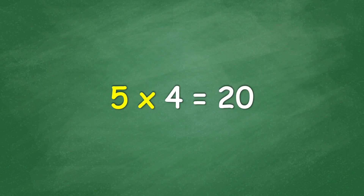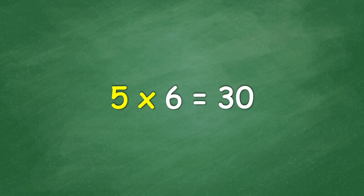5 times 4 equal 20. 5 times 5 equal 25. 5 times 6 equal 30. 5 times 7 equal 35.